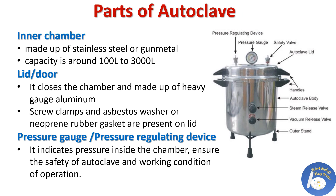Parts of autoclave: The first is the pressure chamber, the inner chamber made up of stainless steel or gun metal, with a capacity of around 100 to 3,000 liters — this is where materials to be sterilized are kept. Next is the lid or door, made up of heavy-gauge aluminium; screw clamps and an asbestos washer or neoprene rubber gasket on the lid provide an airtight seal to prevent leakage of steam. Next is the pressure gauge, which indicates pressure inside the chamber and assures the safety and working condition of the operation.